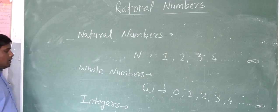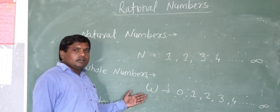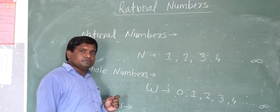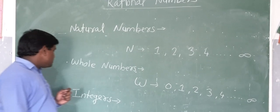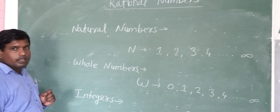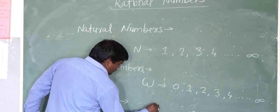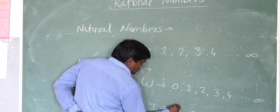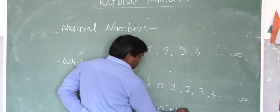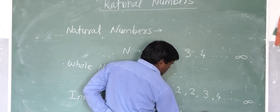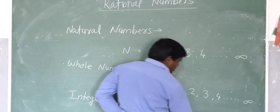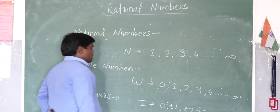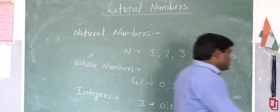Whole numbers with positive and negative signs are called integers. Integers are represented by capital I. We can write them as 0, plus or minus 1, plus or minus 2, plus or minus 3, plus or minus 4, and so on. So we represent integers by the letter I.